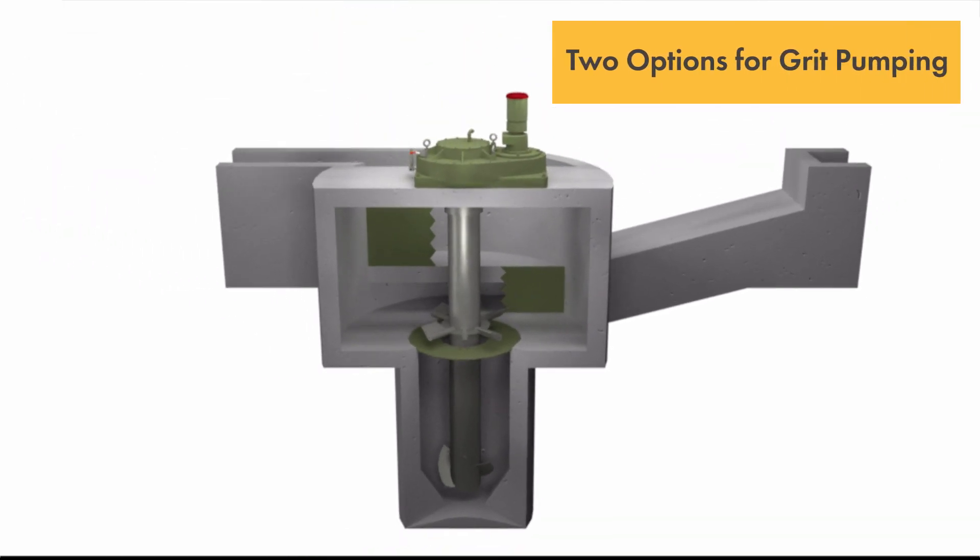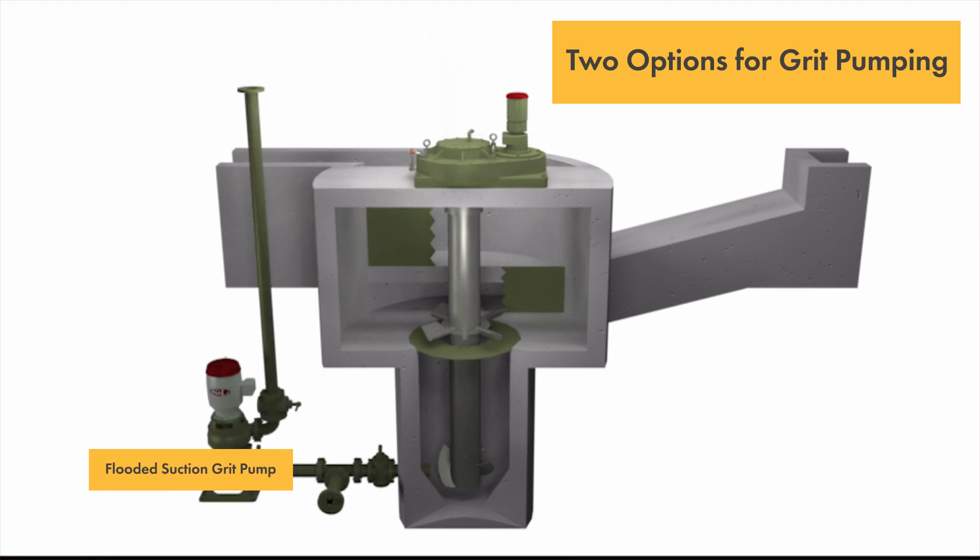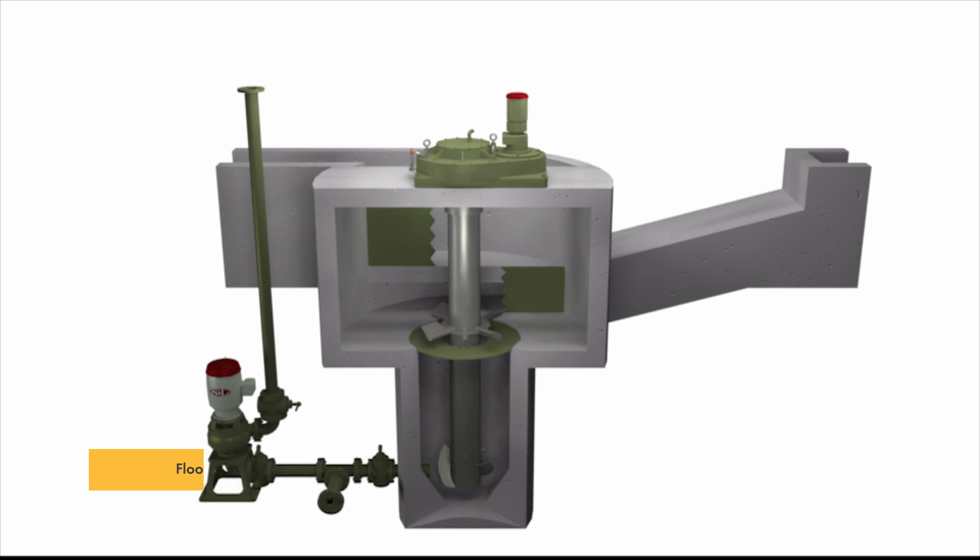Two options are available for pumping grit from the hopper to a dewatering unit: the Pista top-mounted or the Pista flooded suction grit pump. Both the top-mounted Pista Turbo Grit Pumps and flooded suction Pista Turbo Grit Pumps offer unique advantages.